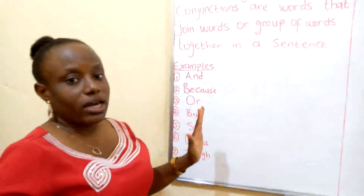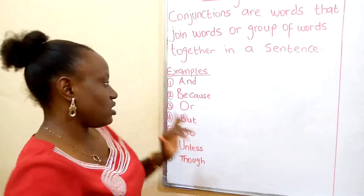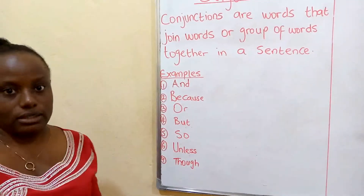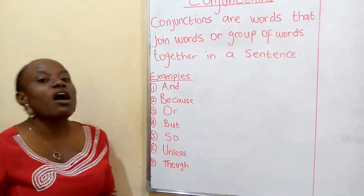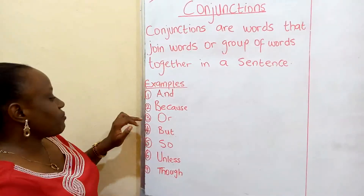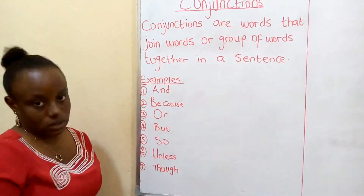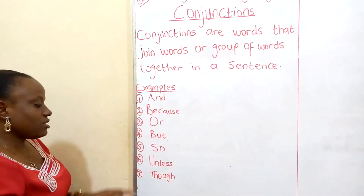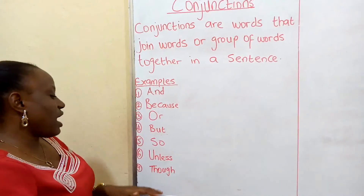Now there are many, and they are not only limited to the seven I have listed on the board. But for your level, we will just take these seven. Number one, we have 'and' — A-N-D. Number two, we have 'because'. Number three, we have 'or' — O-R. Number four, 'but'. Number five, 'so'. Number six, 'unless'. And number seven, we have 'though'.